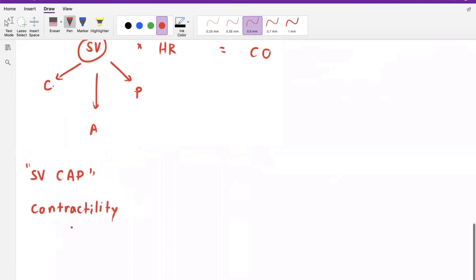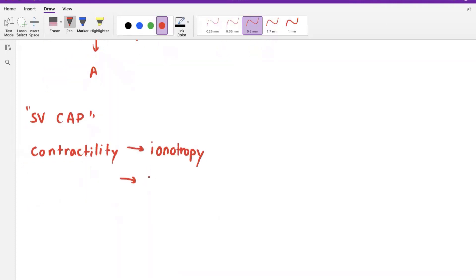Let's first talk about contractility. So contractility, we also call it what? Something with an I. Ianotropy, right? Ianotropy. This is going to be how hard the heart is squeezing.